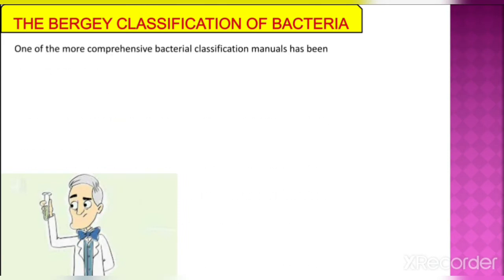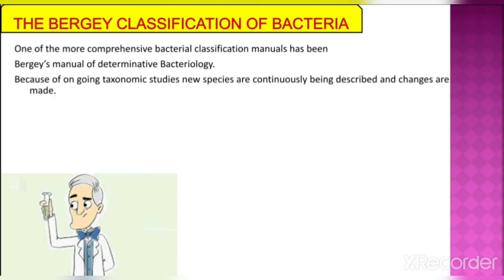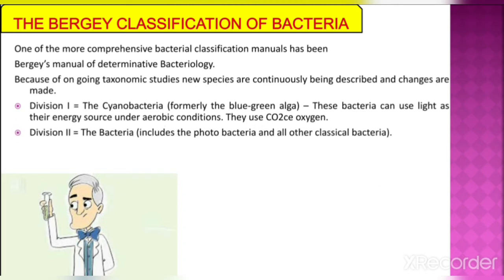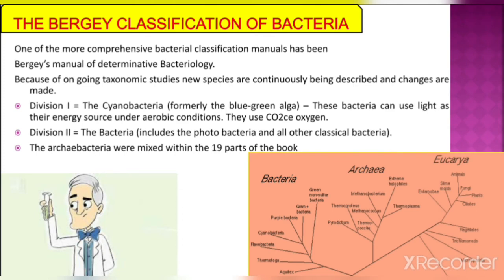Next is Bergey's classification of bacteria. Bergey's manual of determinative bacteriology is one of the more comprehensive bacterial classification manuals. Because of ongoing taxonomic studies, new species are continuously being described and changes are made. The first division is Cyanobacteria, formerly known as blue-green algae — these bacteria can use light as an energy source under aerobic conditions and use CO2 as a carbon source. The second division is about bacteria, which includes photobacteria and all other classical bacteria. The third division is Archaebacteria. This is Bergey's manual classification, covering bacteria, archaebacteria, and eukaryotes.